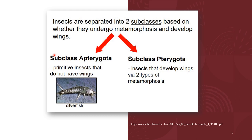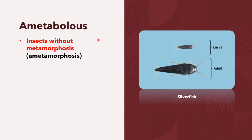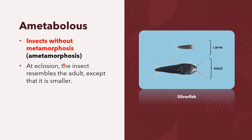The subclass Apterygota consists of primitive insects that do not have wings, such as the silverfish. The subclass Pterygota consists of insects that develop wings via two types of metamorphosis. The first type is the ametabolous type — insects that exhibit no metamorphosis, also known as ametamorphosis.